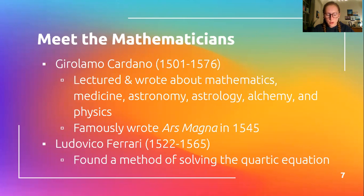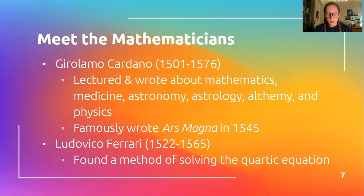Ludovico Ferrari was born in 1522 and died in 1565. He was orphaned at 14 and sent as a refugee to Milan, where he was taken in by Cardano and taught Latin, Greek, and mathematics. He eventually grew in favor with Cardano to the point that he would collaborate with him in research about the cubic and quartic equations, and was able to find a method of solving the quartic equation.